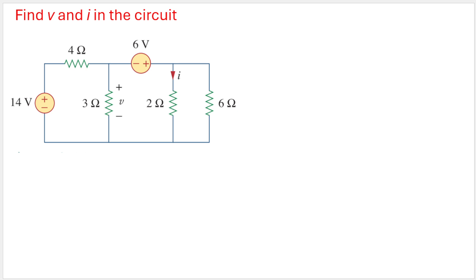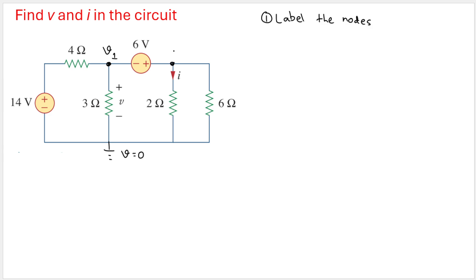Find v and i in the circuit using nodal analysis. The first step is to label the nodes. First, let's set our reference node — the bottom-most node — as our ground, so the voltage there will be zero. Then let's name this node v1 and this node v2.